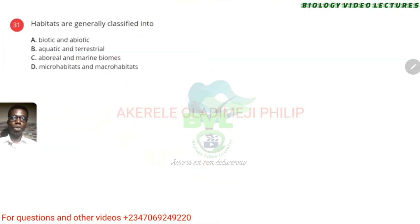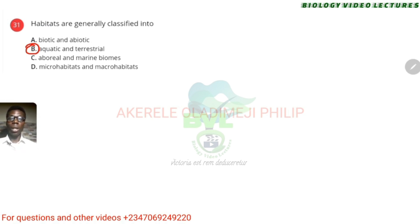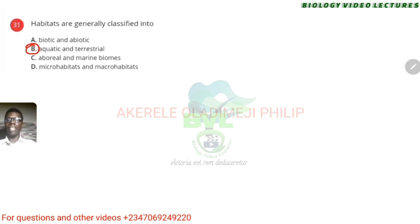Habitats are generally classified into aquatic and terrestrial — the answer is B. Some books go ahead to say aquatic, terrestrial, and arboreal, where arboreal means on the tree or in the air. But trees are on land, so terrestrial already covers arboreal. Micro habitat and macro habitat are just about size — they don't talk about location. So D is not correct because it's just size — small habitat, large habitat. The answer is B.